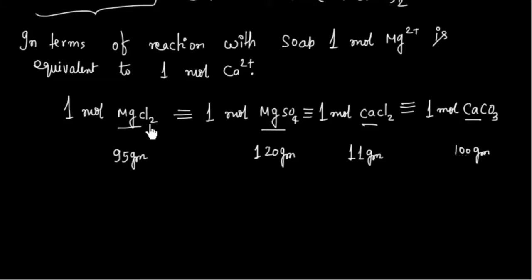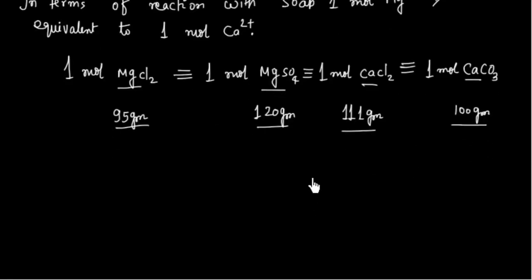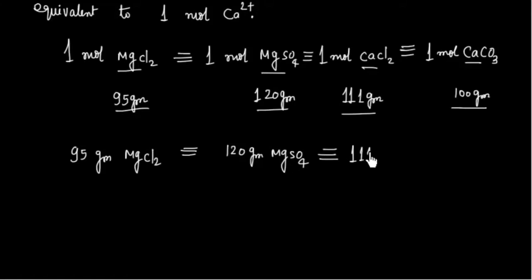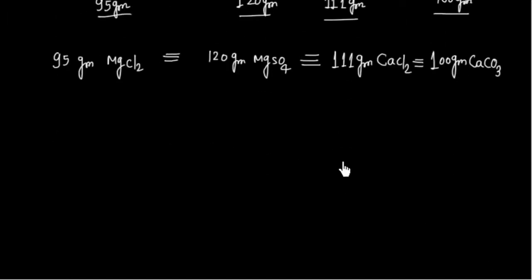Looking at the molecular weights: MgCl₂ has a molecular weight of 95 g/mol, MgSO₄ is 120 g/mol, CaCl₂ is 111 g/mol, and CaCO₃ is 100 g/mol. So we can say 95 g of MgCl₂ is equivalent to 120 g of MgSO₄, which is equivalent to 111 g of CaCl₂, and all are equivalent to 100 g of CaCO₃. To find hardness of water, we always express it in terms of CaCO₃.